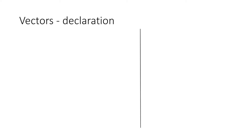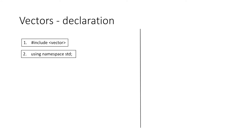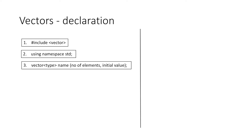Now let's see how we can declare a vector. First of all, to work with vectors we have to include the header file vector and we will use the standard library namespace of C++. Now we can declare a vector by following this format: we write vector, and within the less-than and greater-than signs we write the type of vector we want to create, then we write the name of our vector, and within round braces we specify the number of elements and we can also specify its initial value.